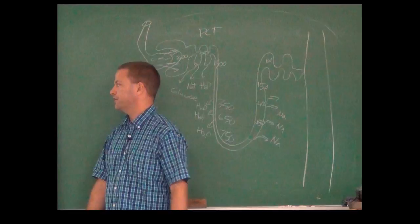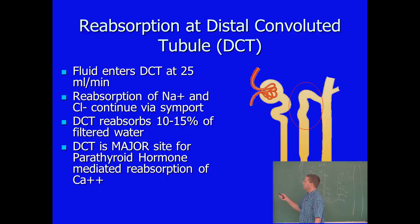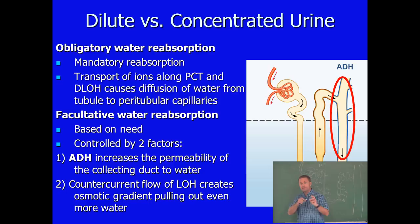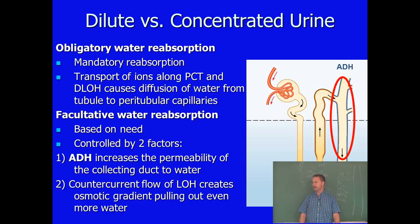What happens next depends on whether we want to produce dilute or concentrated urine — and that's determined in the collecting duct. At the distal convoluted tubule, we still have reabsorption of sodium chloride and calcium. At the collecting duct, we can have facultative water reabsorption — we can choose to reabsorb or not. All the water reabsorption prior to this was obligatory, with no way to tweak it. But here, if the animal is adequately hydrated, the body will leave that water in the duct and it will end up as urine.